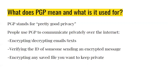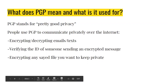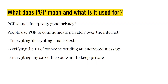You can verify the ID of someone sending you an encrypted message. People like Plan B will post one of their keys online so that if you get a message from someone claiming to be them, you can check and verify the ID of that person. If it doesn't match up with what they posted, you know it's not really them — so that's really important. You can also encrypt any saved file you want to keep private, either on your desktop or in the cloud.